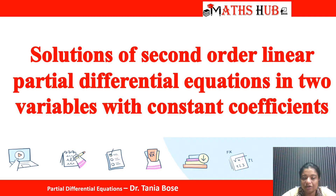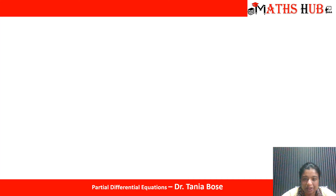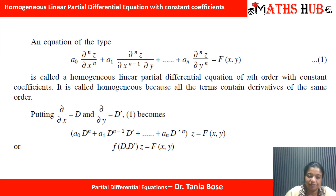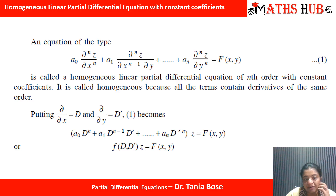First, let us understand what is the second order linear PDE in two variables with constant coefficients. A homogeneous linear PDE with constant coefficients takes the form: a₀ · (∂ⁿz/∂xⁿ) + a₁ · (∂ⁿz/∂xⁿ⁻¹∂y) + ... + aₙ · (∂ⁿz/∂yⁿ) = f(x, y).